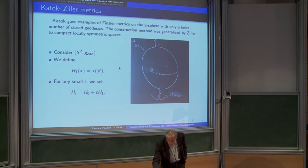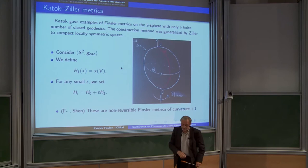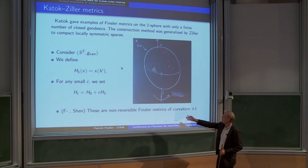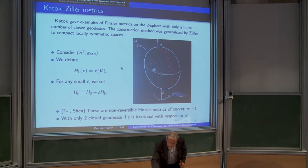Well, if you write it a bit more properly, then it's a Killing field V, the stream. And then you add two Hamiltonian. The standard Hamiltonian plus an epsilon. And using Legendre transform, you go back to Lagrange. And it was quite a surprise for Zhen and me that we discovered independently that these are non-reversible Finsler metric of curvature plus one in the sense of flag curvature. And they have only two closed geodesics.